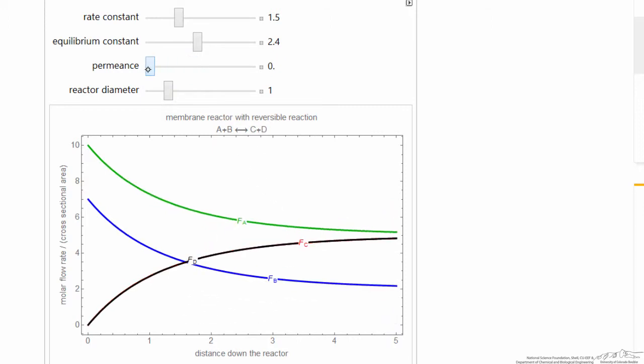If I make it where there's no permeance, so there's just a regular plug flow reactor, now the stoichiometry says the flow rate of C and D are the same.